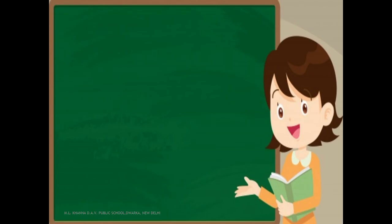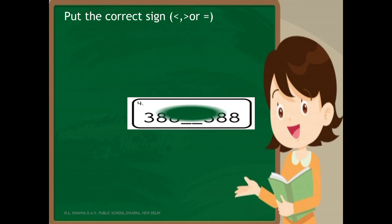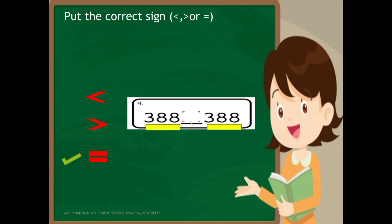Next question: compare 388 and 388. Each digit in the corresponding place values is equal, so we use the equal to sign. Both numbers are the same, so 388 is equal to 388.